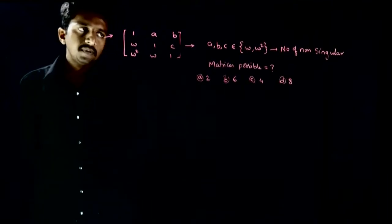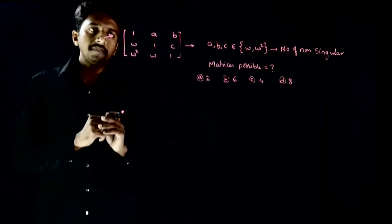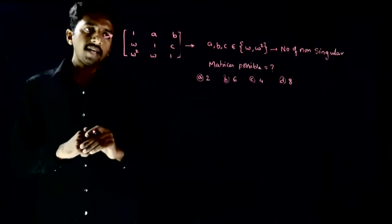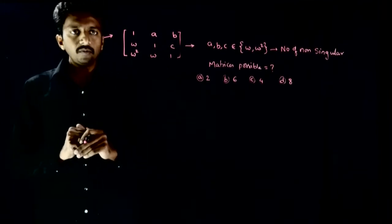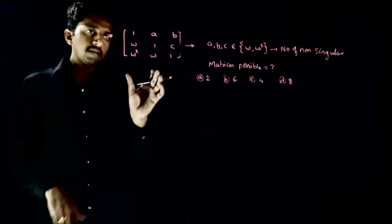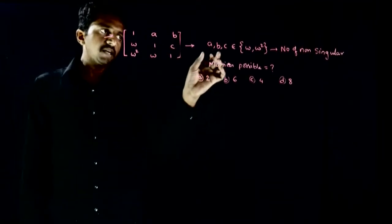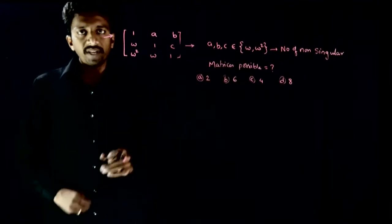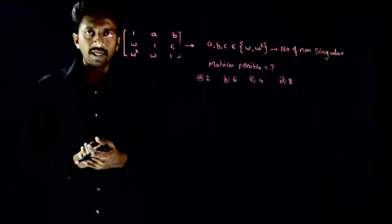Welcome students. In this question we have a matrix which has three unknowns: 1, a, b; ω, 1, c; ω², ω, and 1. These three numbers a, b, c belong to the set {ω, ω²}, where ω is the complex cube root of unity.